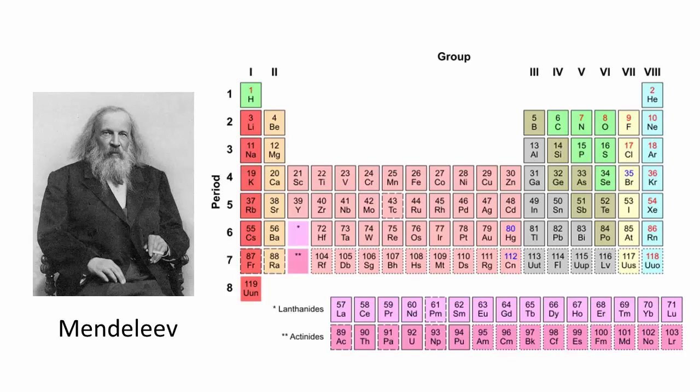Though the periodic table seems fairly evident to us today, based on the fact that elements in the same column or group share the same valence electronic configuration, we must keep in mind that in Mendeleev's time, electrons, protons, nuclei, and quantum theory were still decades away from being discovered. Mendeleev's periodic table is one of the greatest scientific accomplishments of all time.